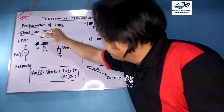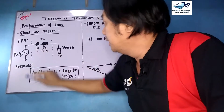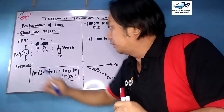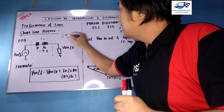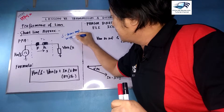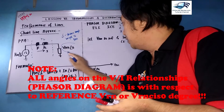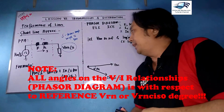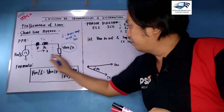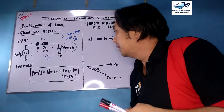From the short line approximate circuit, we have the generating source, transmission line, and load. VSN is the sending-end voltage at angle alpha, where alpha is the transmission angle with respect to the reference VRN. VRN is the receiving-end voltage at angle zero — it is the reference. The current I equals the receiving current IR, which also equals the sending current IS, since this is a series circuit.